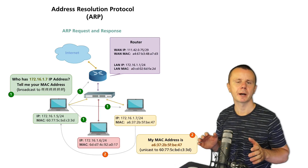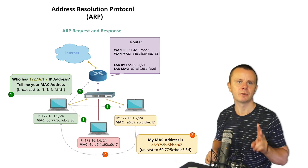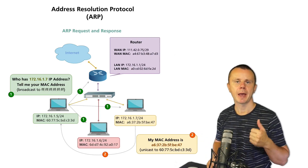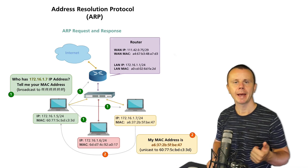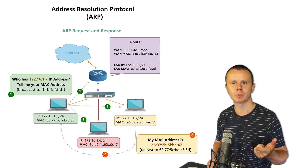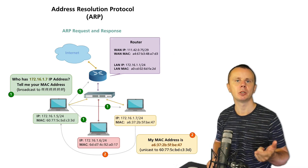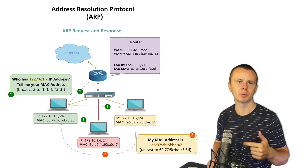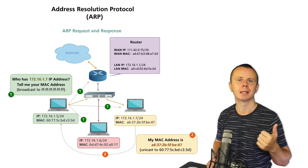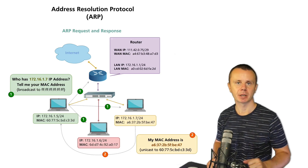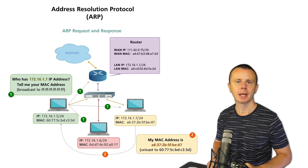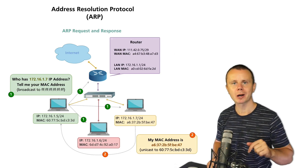In short, ARP uses two different packets: an ARP request that is sent to a broadcast MAC address, and an ARP response that is sent unicast from the destination host back to the source host that originally sent the ARP request.